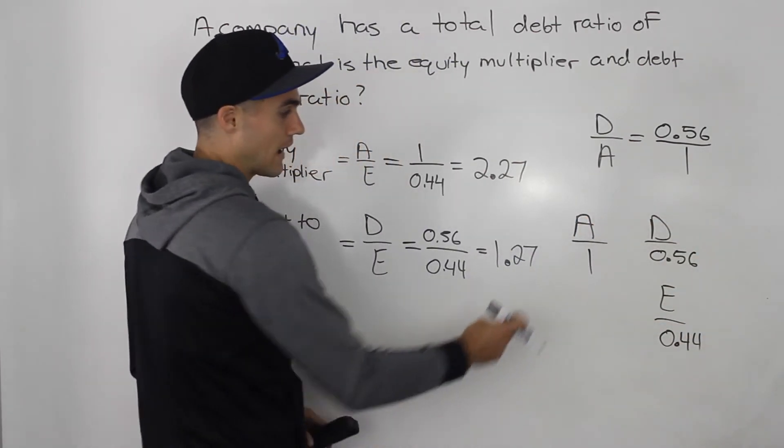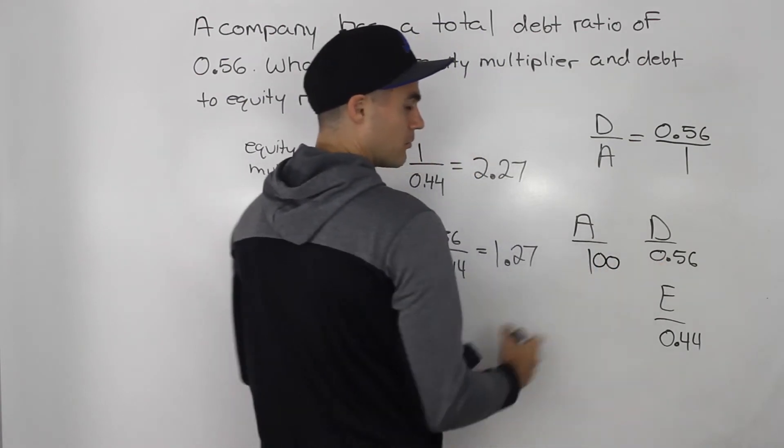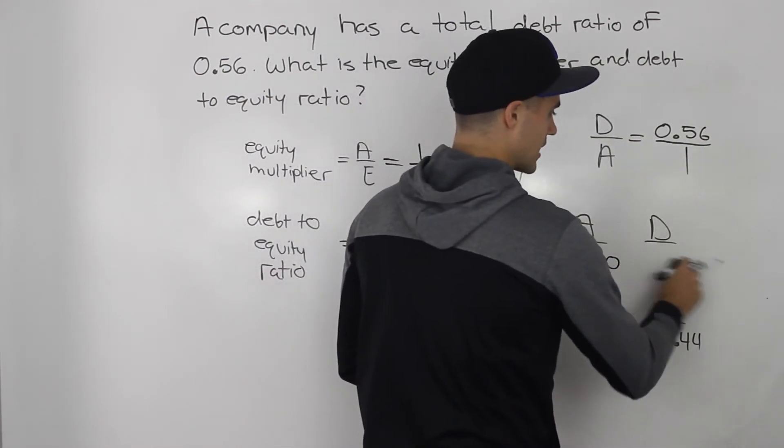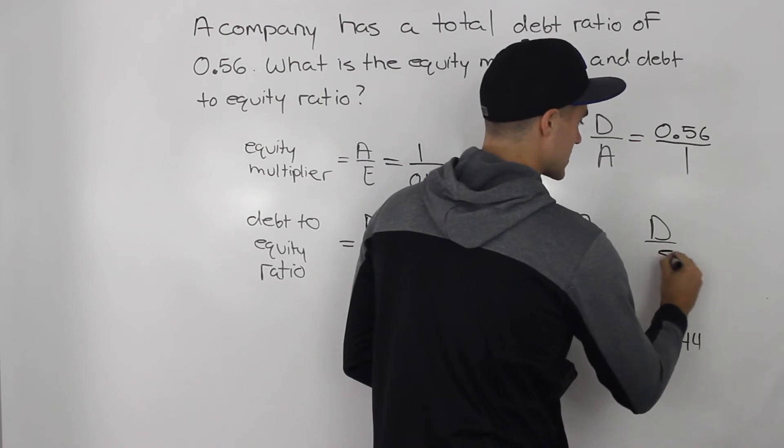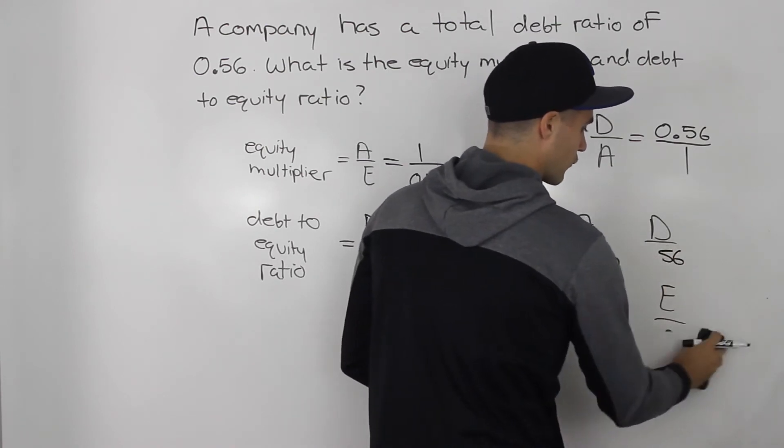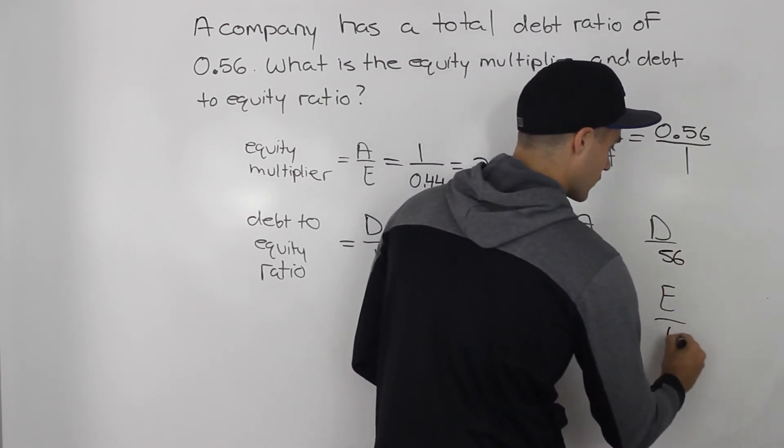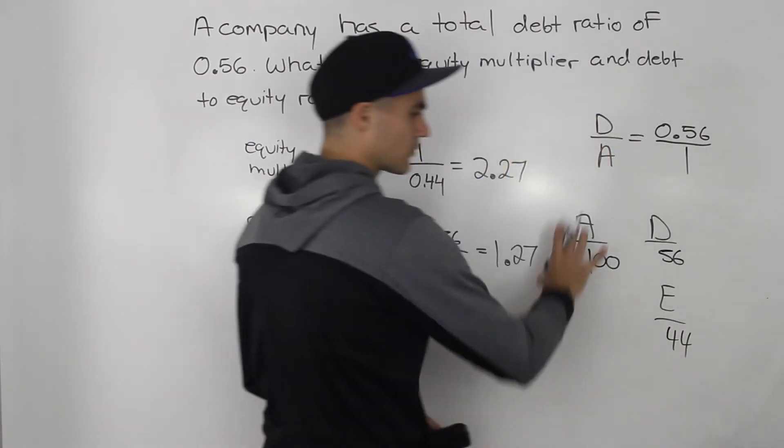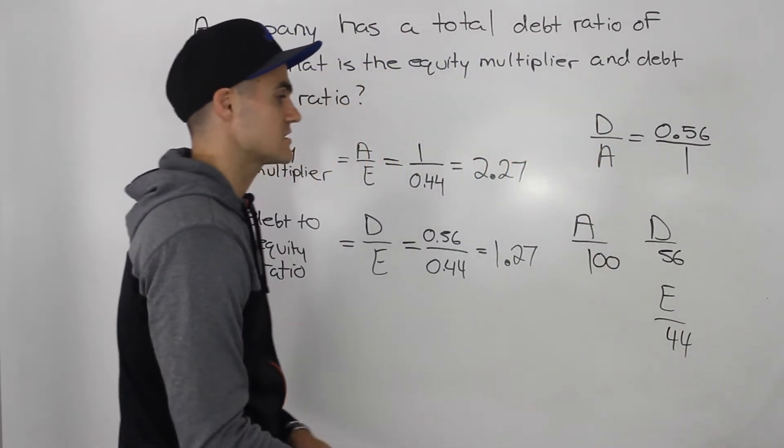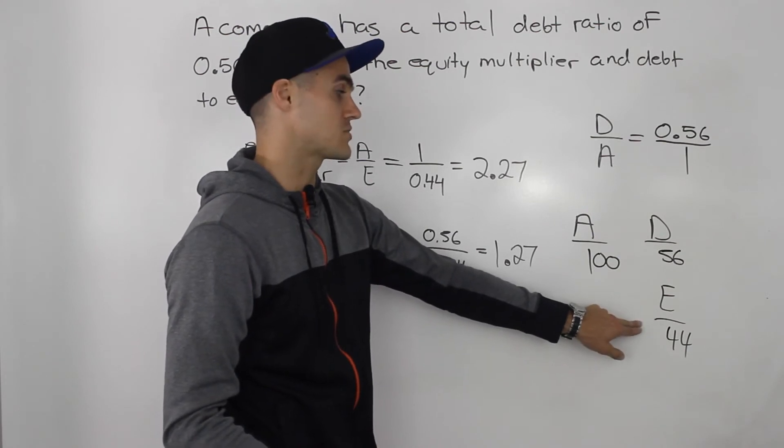And if you do that, 1 times 100 is just 100. 0.56 times 100 would give us 56. And then 0.44 times 100 gives us 44. Right? And the ratios are still the same. But now notice we're not working with decimals.